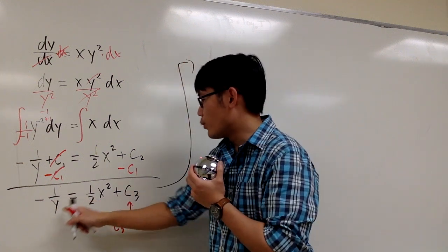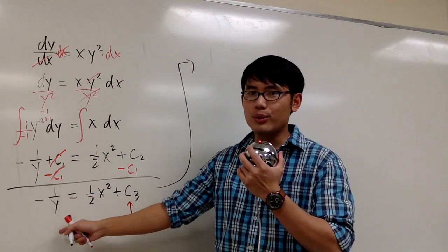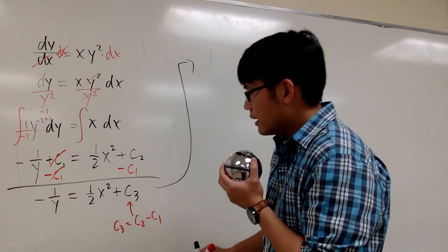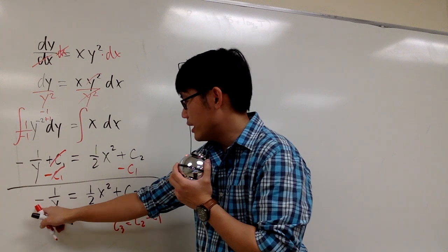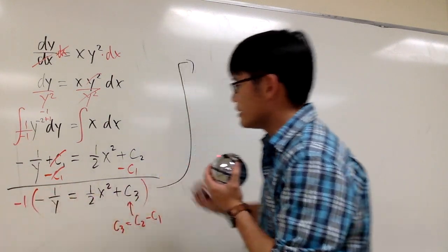I have negative 1 over y is equal to this expression. Our goal is to isolate the y whenever we can. And we can totally do that. So let's do that. Well, to isolate y, perhaps we can multiply everything by negative.